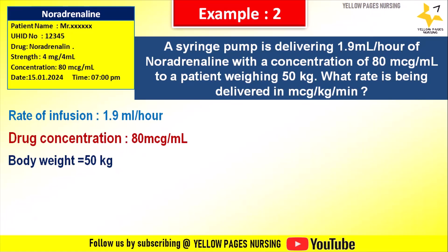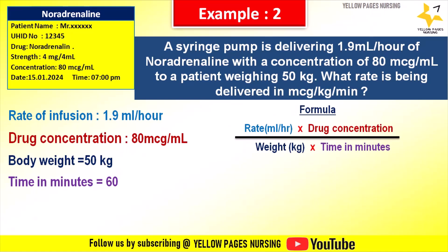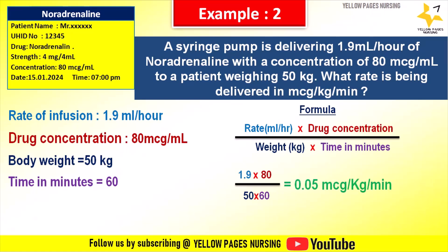Rate of infusion is 1.9 ml per hour, drug concentration is 80 mcg per ml, body weight is 50 kg, and time is 60 minutes. Using the formula: 1.9 × 80 ÷ 50 ÷ 60, which gives the answer 0.05 mcg per kg per minute.